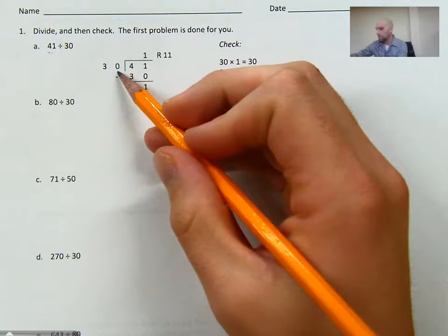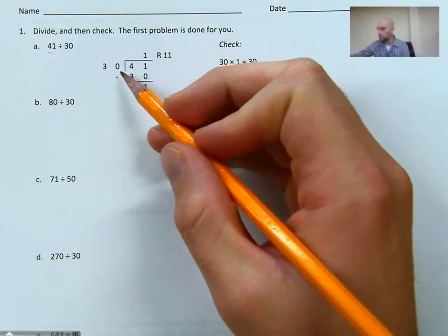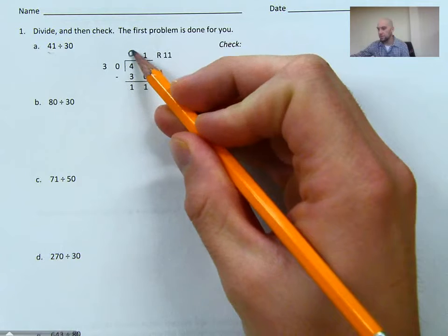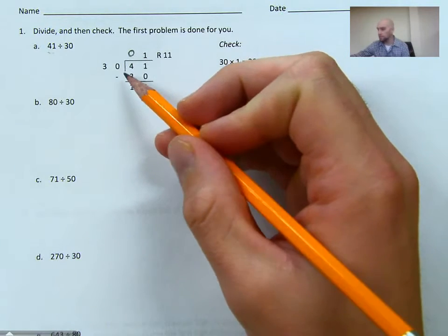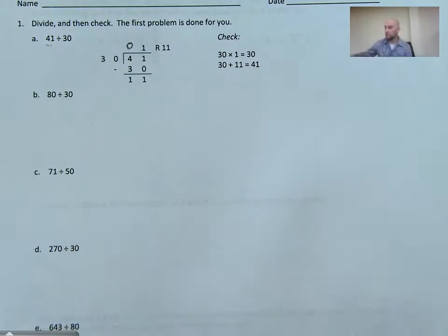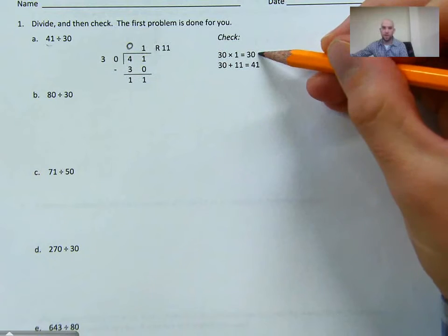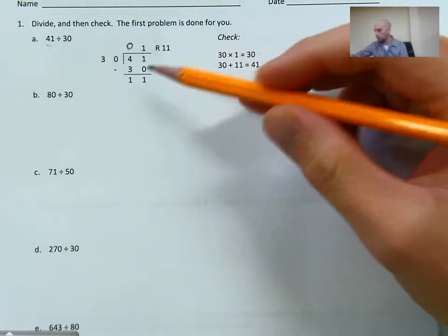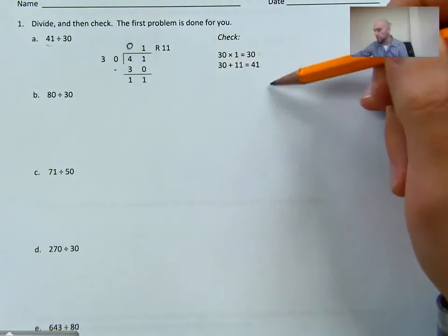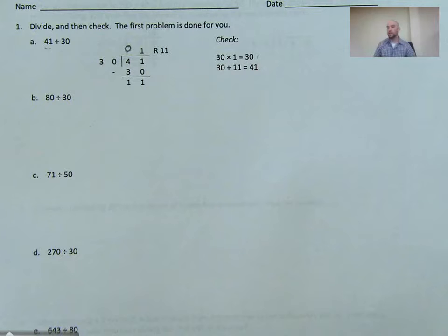Here they did 30 going into 41. Well, 30 can't go into 4. Sometimes we would put a 0 right here if that makes things easier. 30 goes into 41 one time, and then we subtract our 30, and we have a remainder of 11. They've also checked their work here. So we have 30 times 1 plus our remainder, plus our 11, and we should get 41. We should get our dividend when we check that with multiplication, because multiplication is the inverse of division. So we'll walk through that step by step here in our next few problems.